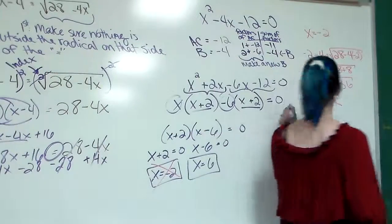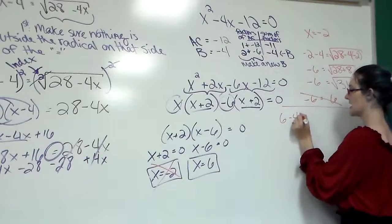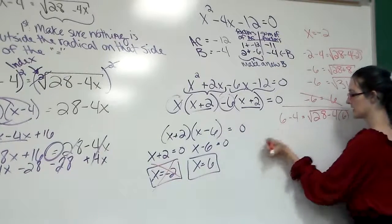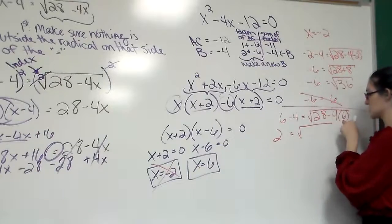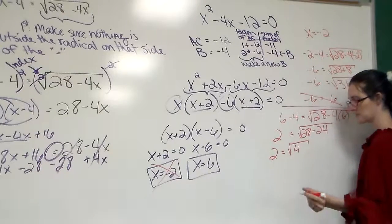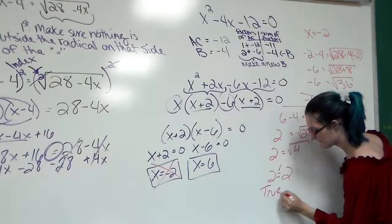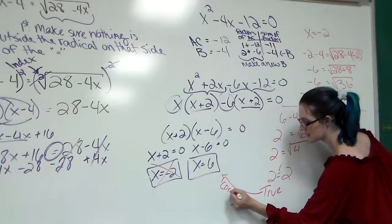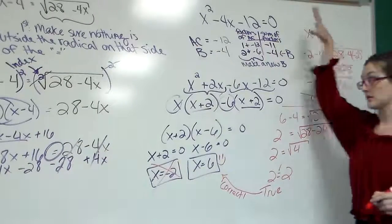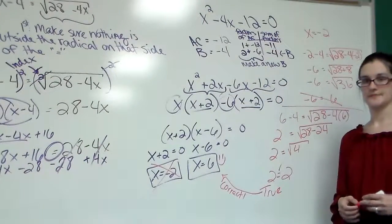We need to check the other one x equals 6 to see if 6 will work. We're going to have from the very beginning x minus 4. So 6 minus 4 equals the square root of 28 minus 4 times x, which is 6. 6 minus 4 is 2. 4 times 6 is 24. 2 equals 28 minus 24. Square root of 4. Principal answer is 2. 2 equals 2. This is true. Meaning, that is correct. Did not work. Answer is wrong. Don't include it in your final answer. Came out to a true statement. It worked. That answer is correct.